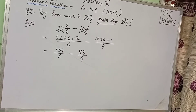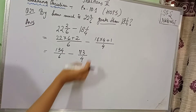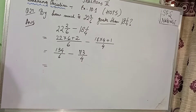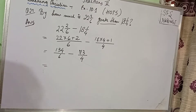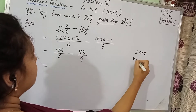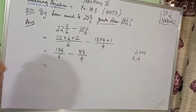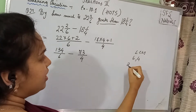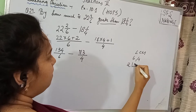Now, what do you have to do? You have to subtract these fractions. Children, you will note that they are not like fractions. Why? Because the denominators are not equal. So what do you do? You take the LCM of 6 and 4. Now 6 and 4 have a common factor — they are both even numbers.